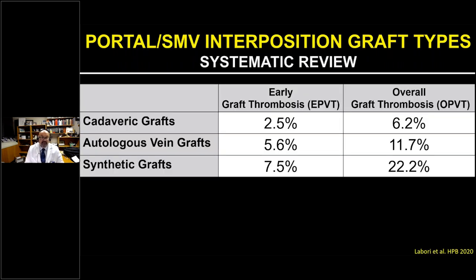A systematic review on graft types found that cadaveric grafts had the lowest rates of early overall graft thrombosis, followed by autologous vein grafts, with synthetic grafts performing worst. In our experience, autologous and cadaveric are similar, but synthetic grafts do have a much higher complication rate. Pericardial tube grafts — once popular — have uniformly occluded in our experience of about two dozen cases, leading to mortality, and are not recommended.